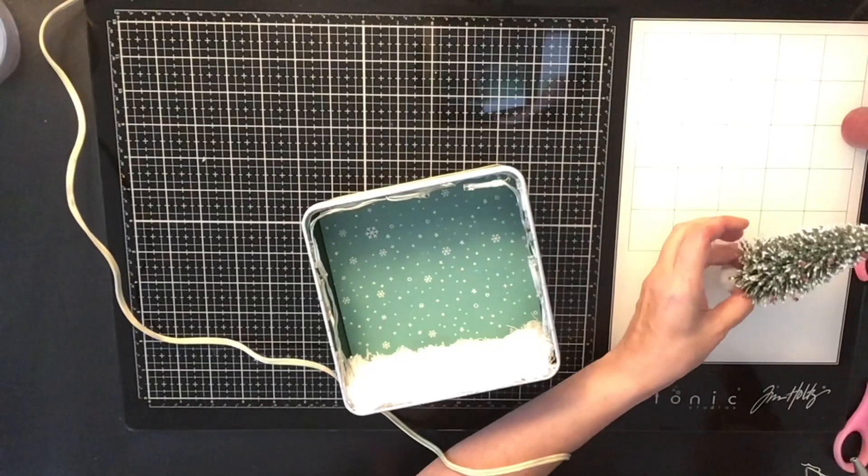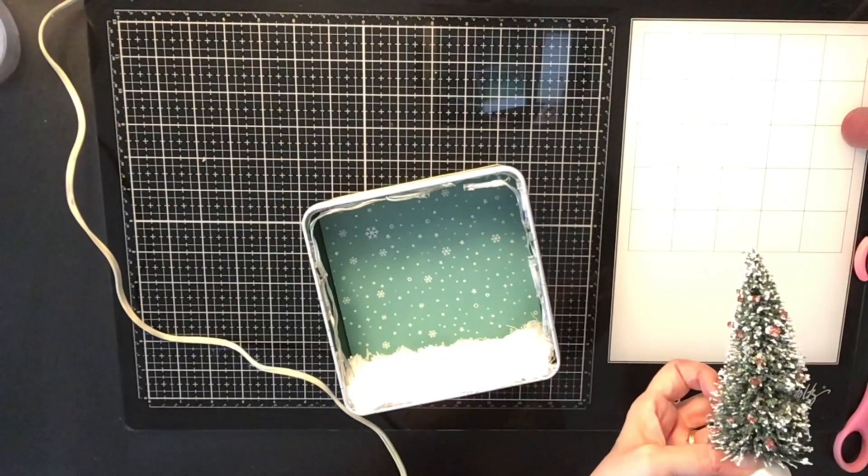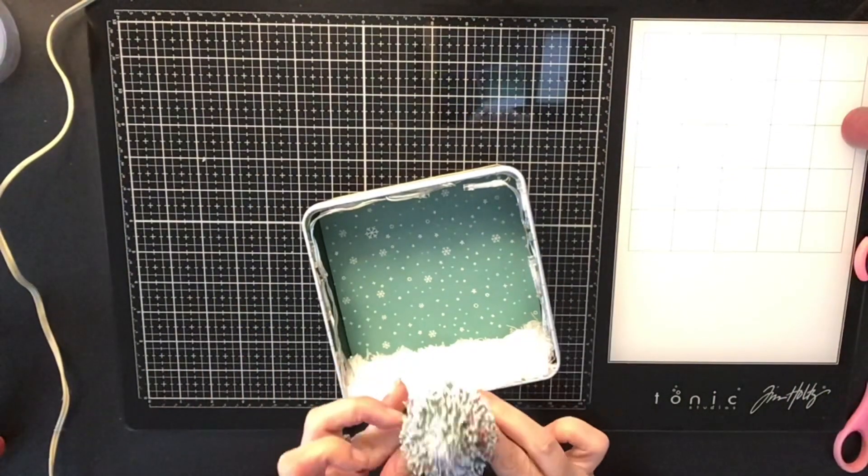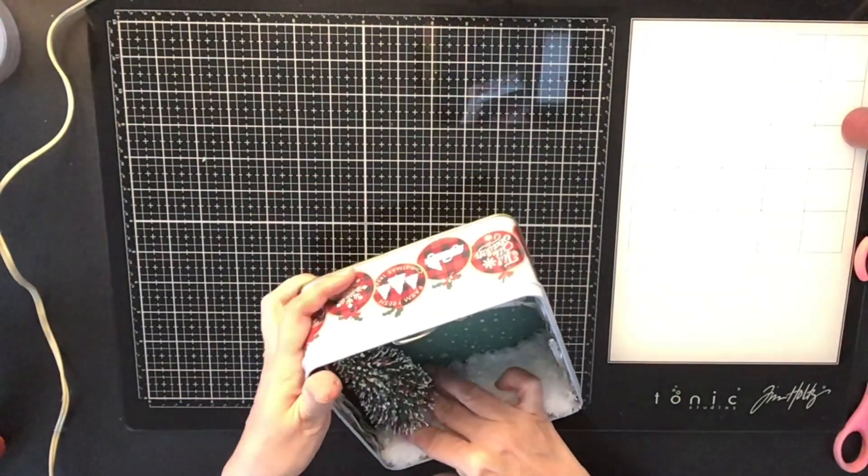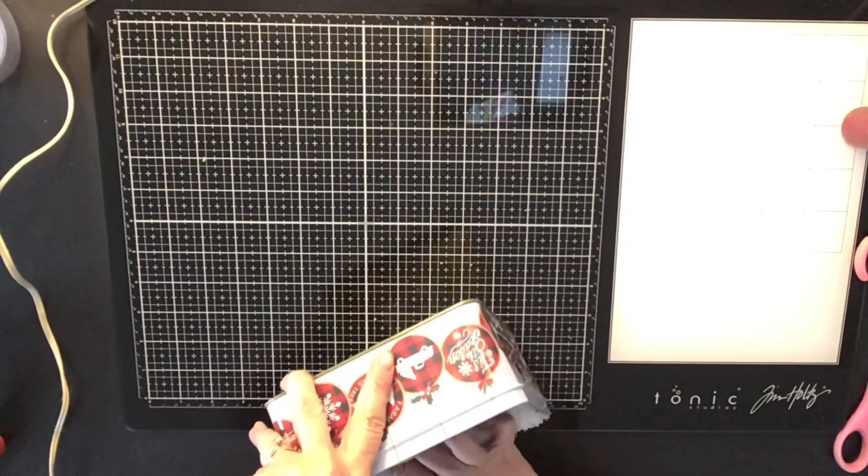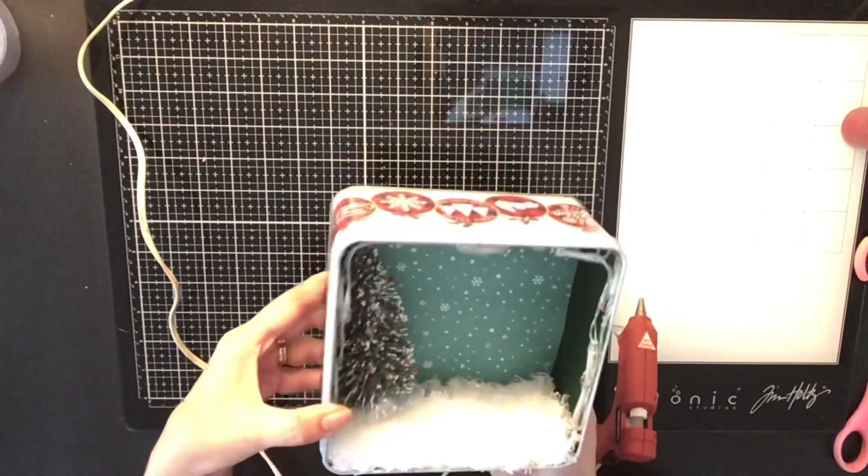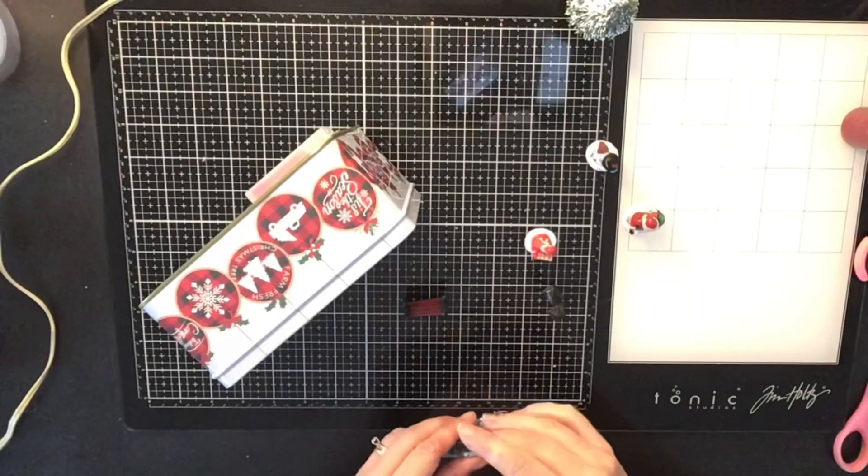And there is my tree all spruced up with little ornaments. So now what I'm going to do is I'm going to put the hot glue on the bottom of it and I'm going to glue it down into the tin on top of my snow. There it is. I love this idea guys. It's so cool.